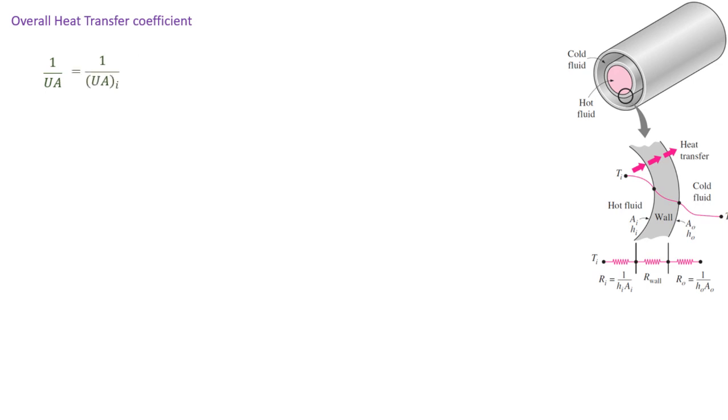We could define a heat transfer coefficient for the inner side, which in this case is the hot side. We could define one for the outer side, which in this case is the cold fluid. And those heat transfer coefficients do not necessarily equal one another. They won't equal each other if the areas on the inner and outer sides do not equal each other.